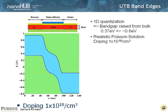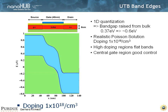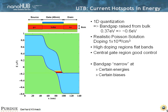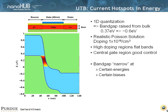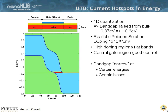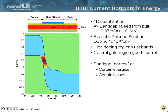It comes out of the tight binding model. Now, shown here in red, you can see that the band gap is narrow at certain energies and certain biases. So at certain energies and certain biases, you have a broad range over which you can conduct possibly.